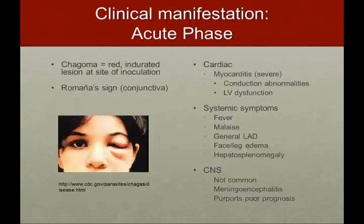In the acute phase, you can get a chagoma — a red indurated lesion at the site of inoculation. There's also the Romaña sign, which is swelling and induration of the conjunctiva or soft tissue periorbital region, and there's a picture of that here. Acutely, you can also have a very severe myocarditis with conduction abnormalities and LV dysfunction. These conduction abnormalities are quite severe and cause a lot of the fatalities in young adults with Chagas disease. Systemic symptoms include fever, malaise, and general lymphadenopathy. You can also have some edema of the face and legs, and hepatosplenomegaly.